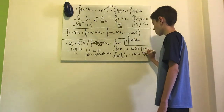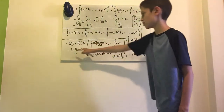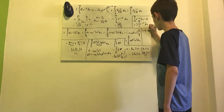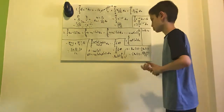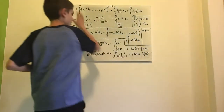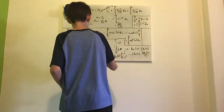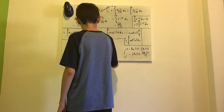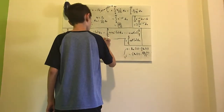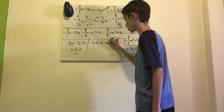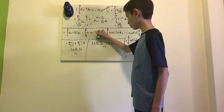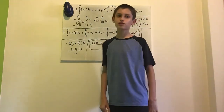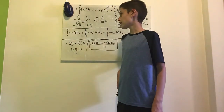Combining everything over the denominator of 12, our final answer is (2pi√3 minus 3pi plus 6 ln 2) over 12. That is the end of the video — thank you for watching, and don't forget to like, share, and subscribe, and I will see you in the next video. Bye!